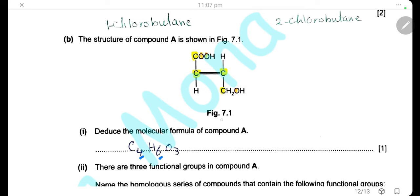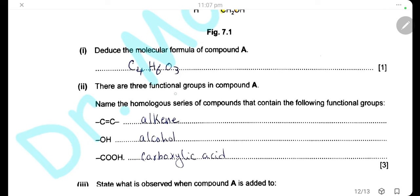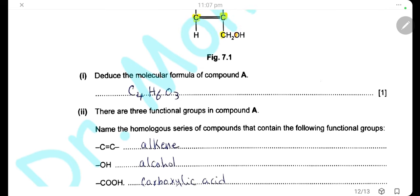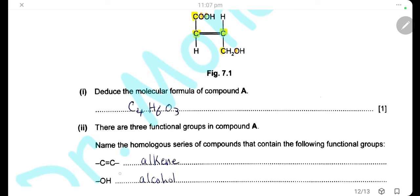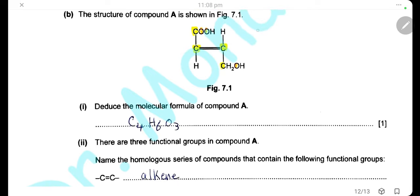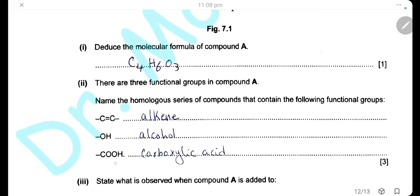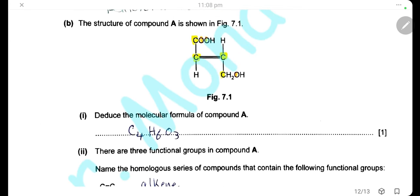Compound A has three functional groups, each representing a different homologous series: a carbon-carbon double bond (C=C), which is the functional group of alkenes; a hydroxyl group (–OH), which is the functional group of alcohols; and a carboxylic group (–COOH), which is the functional group of carboxylic acids.